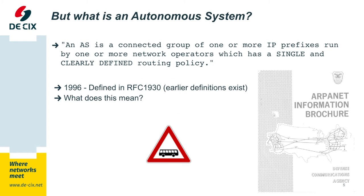But what is an autonomous system? An autonomous system is a connected group of one or more IP prefixes run by one or more network operators which has a single and clearly defined routing policy. That's the definition. It's defined in RFC 1930 with exactly this wording. There were earlier versions but that's the up-to-date definition of an autonomous system.